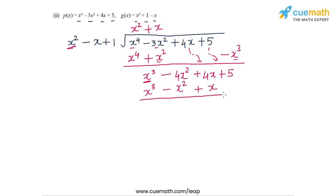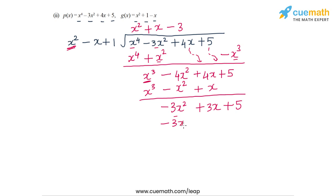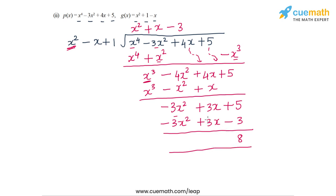Subtracting again: -4x² minus (-x²) is -3x², then +3x and +5. The third multiplier is -3 to turn x² into -3x², generating terms -3x² + 3x - 3. Subtracting leaves only 8, so the division terminates. The quotient polynomial is x² + x - 3 and the remainder polynomial is 8.